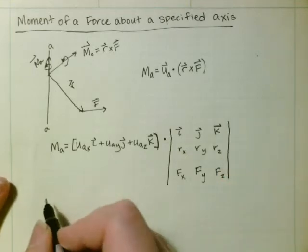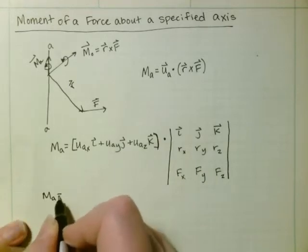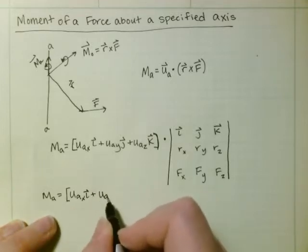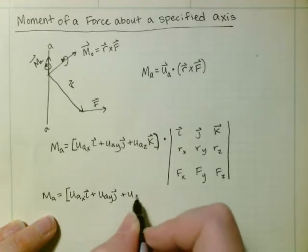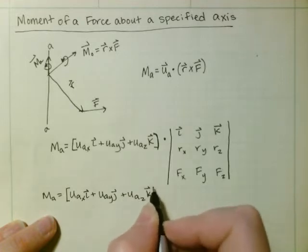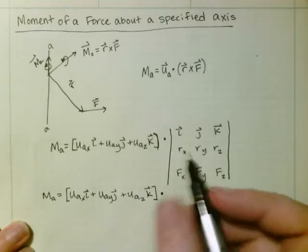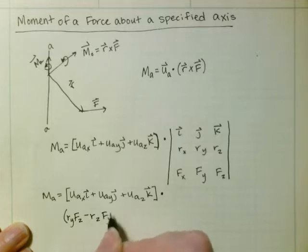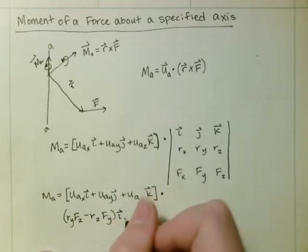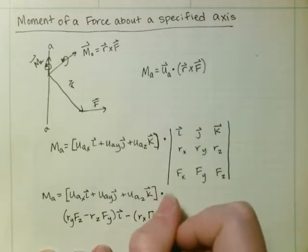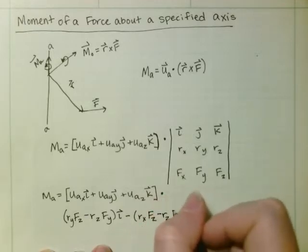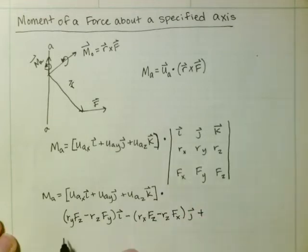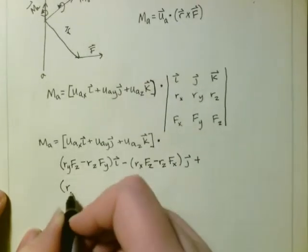So if we do that cross product, we get M_a is equal to u_ax i plus u_ay j plus u_az k, and that's dotted with (r_y f_z minus r_z f_y) in the i direction, minus (r_x f_z minus r_z f_x)